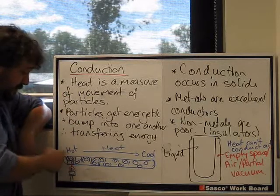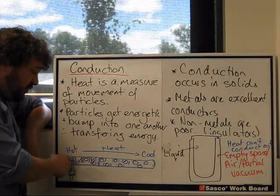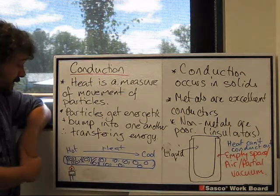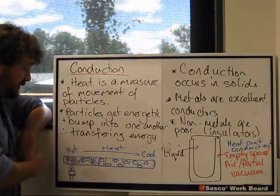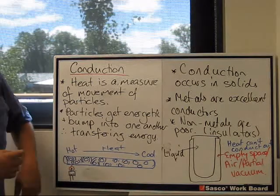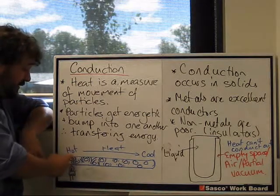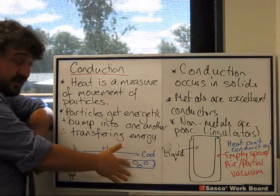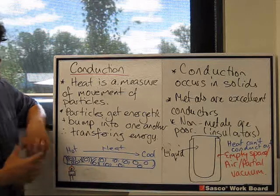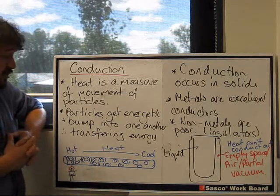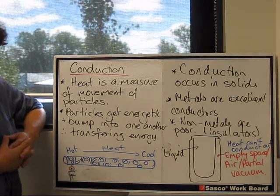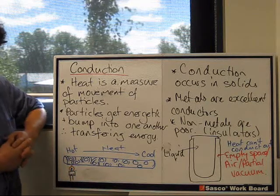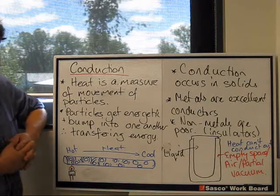If we heat a rod at one end, we can measure how the heat moves along that rod—that's what we're going to do in class. The particles start to vibrate, vibrating more at the heated end and less and less until they're not vibrating any more than the base level. Conduction occurs in solids; it can only occur in solids. Metals are excellent conductors, and non-metals are very poor conductors. We call those insulators.